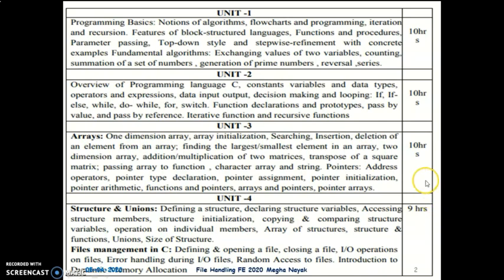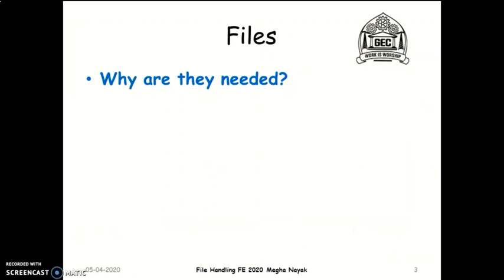You may wonder why we need files. In the units we have covered so far - unit 2 and unit 3 - whenever we needed to process any data, we gave input on our console, which is the black screen where you put in all your values. For example, name of student, age, marks stored, etc. But what happens to these values after the program has finished processing? Are these values retained or do we lose them? Definitely these values are processed and then we lose them once the C program is terminated.